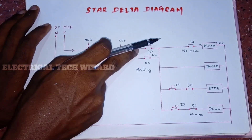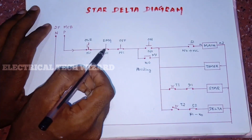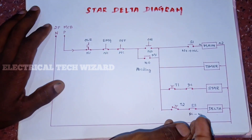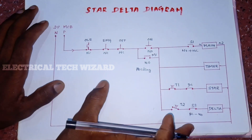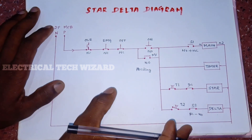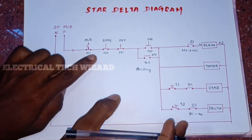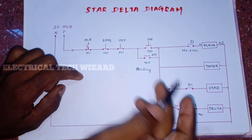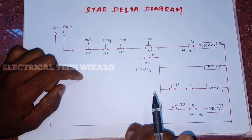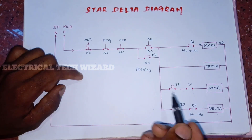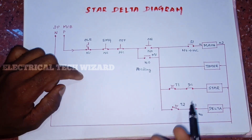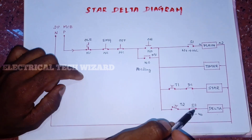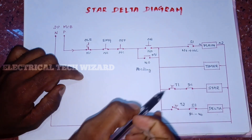We will press it on with delta. We'll press it on and we'll press it off. If we press it on, we'll press it off. The control is half of the motor. The supply is disconnected. The motor is off. D1 and S2 is interlock. The control is D1.